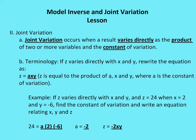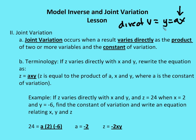Joint variation. Also very similar to inverse and direct. Joint variation occurs when a result varies directly as a product of two or more variables and the constant of variation. So direct variation was y is equal to a times x. Now we add in another variable — let's say z — and that becomes joint variation. If z varies directly with x and y, we rewrite the equation as z is equal to the constant of variation times x times y. So z is equal to the product of a, x, and y, where a is the constant of variation.